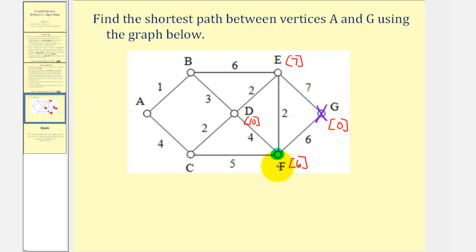C also leads to F. Notice six plus five is eleven, so we'll mark C as eleven. Now we can mark F as visited.